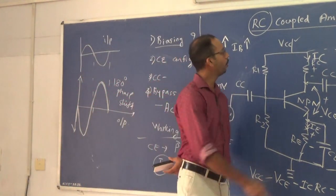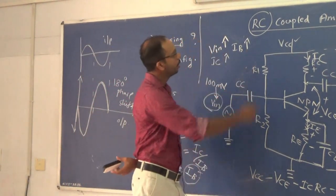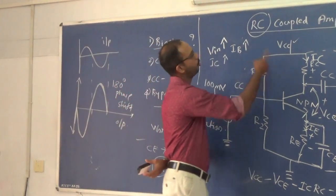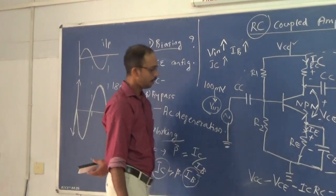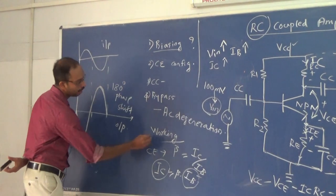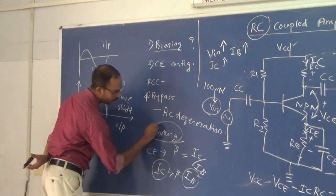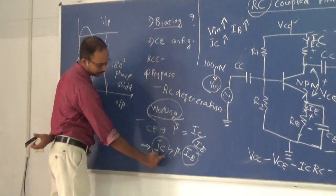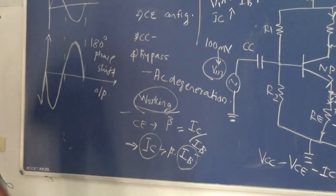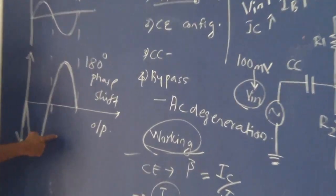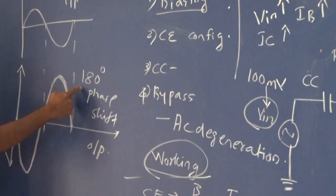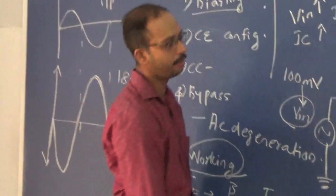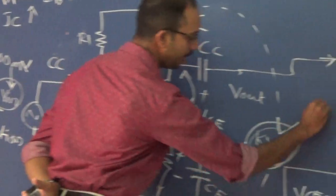In this video we have discussed the major components of the RC coupled amplifier and its working. We used the gain equation IC = beta × IB, and the relationship between input and output. The reason for the 180-degree phase shift was explained by applying KVL to get the equation VCE = VCC − IC(RC + RE).